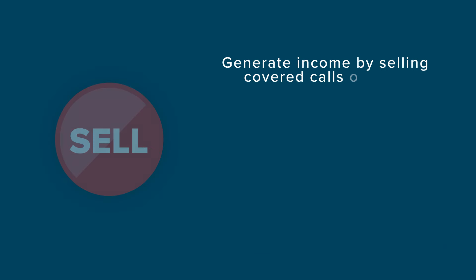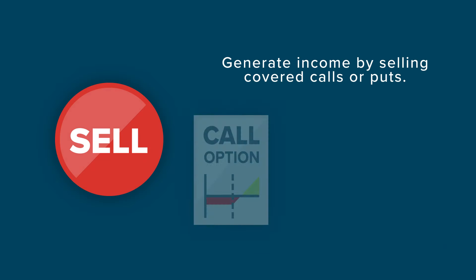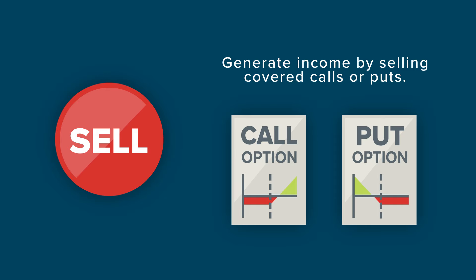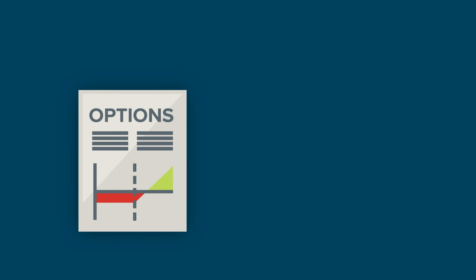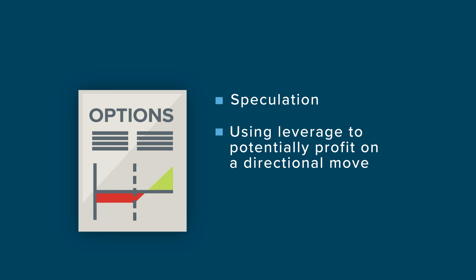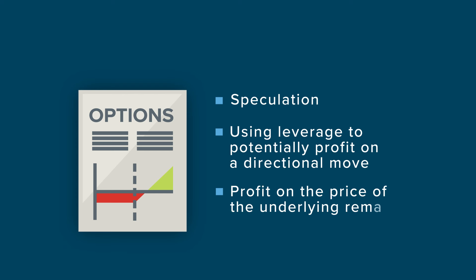Options can be used to generate income by selling covered calls or puts. Options may also be used for speculation, using leverage to potentially profit on a directional move, or depending on the trade, potentially profit on the price of the underlying remaining relatively flat.